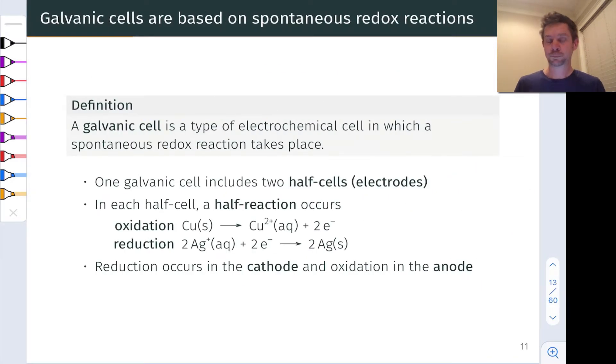Let's move now to defining what we mean by a galvanic cell. A galvanic cell is defined as an electrochemical cell in which a spontaneous redox reaction takes place. The word spontaneous here is key. A galvanic cell powers current or voltage via a spontaneous redox reaction. That's the hallmark of a galvanic cell.